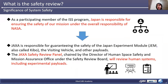As a participant in the ISS program, JAXA is responsible for ensuring the safety of our mission under the overall responsibility of NASA. JAXA is responsible for guaranteeing the safety of the KIBO, the visiting vehicle, and other payloads. The JAXA safety review panel will review the human systems including experimental payloads and so on.